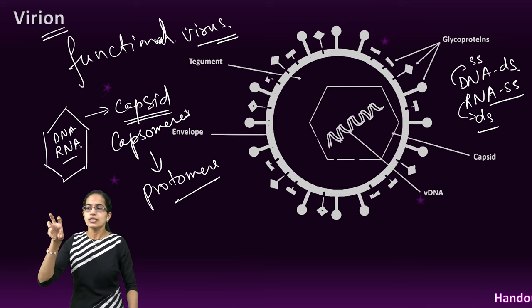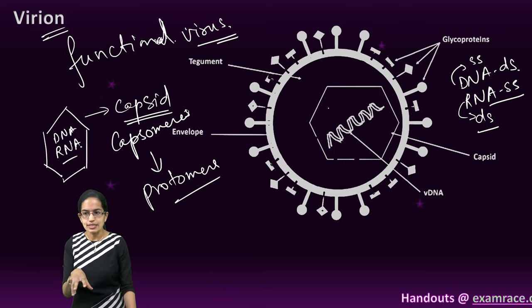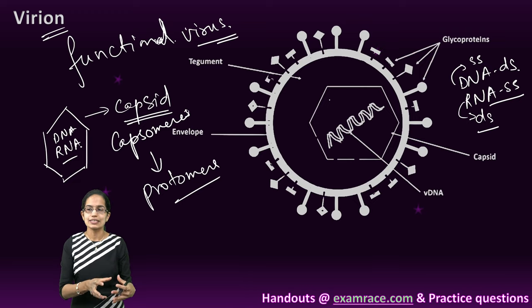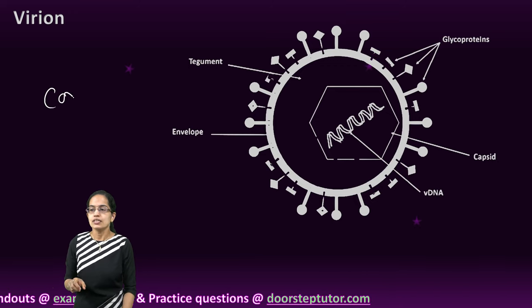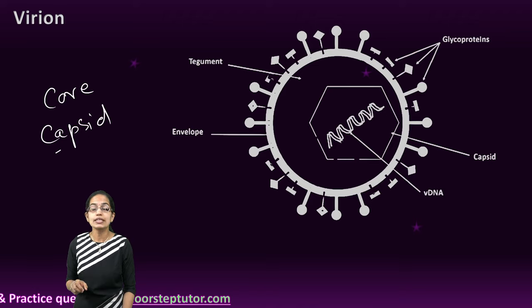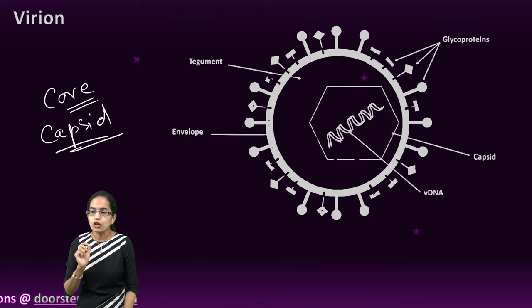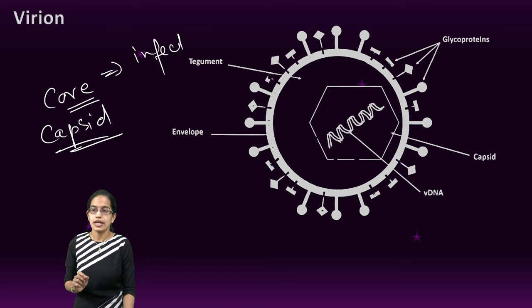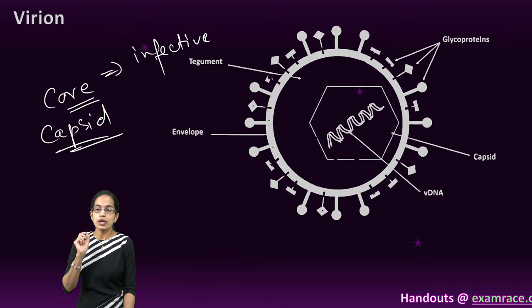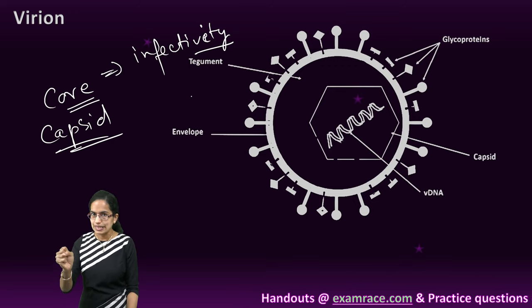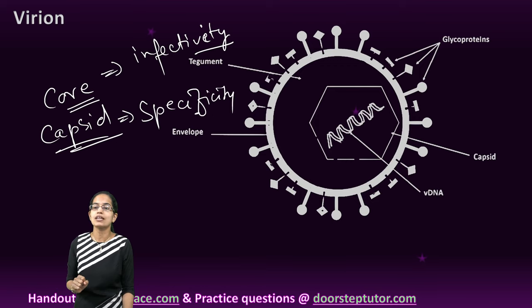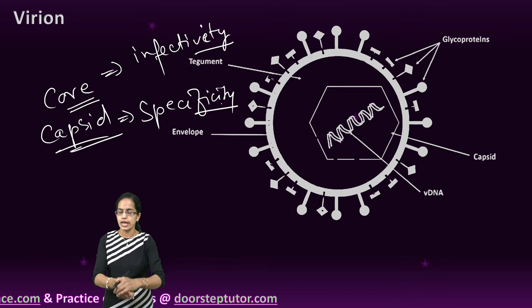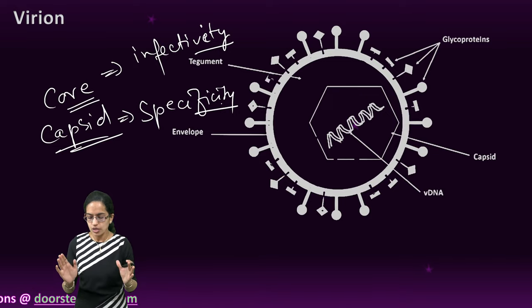For now, this virion is a special case of viruses. It is a functional virus which has the capability to infect. As we said, the core and the capsid. What is so unique in case of virions? In virions, the core is infective. It has the capability to infect, so infectivity is governed by the genetic material, and the capsid has the specificity. That means it determines where to actually bind on the site, and this is what makes virions very special and unique.